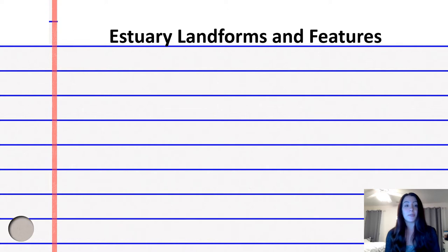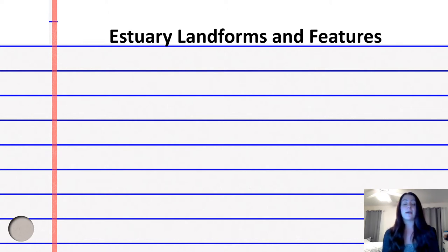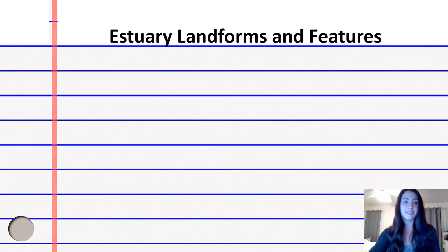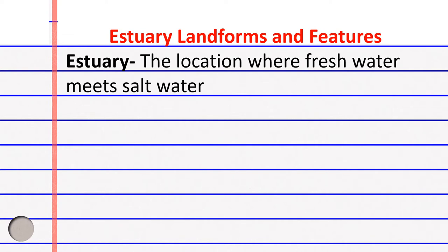I do want you to check out the images and the suggestions on different estuary landforms and features, because you will have a project on this at the very end. I will be discussing the performance tasks on the last slide as well. An estuary is the location where freshwater meets saltwater. About 75% of our commercial fishing happens in an estuary, and they provide an amazing habitat for all these different marine creatures.